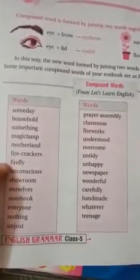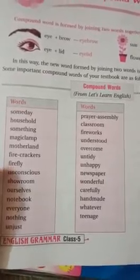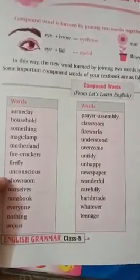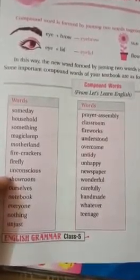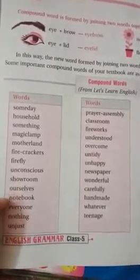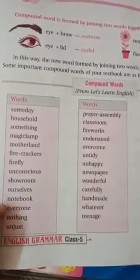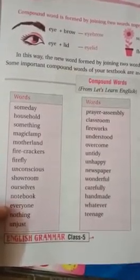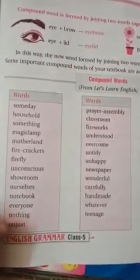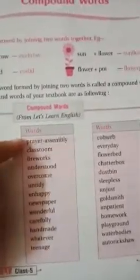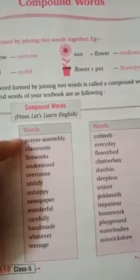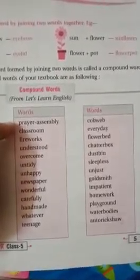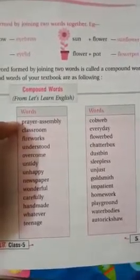More examples include firecrackers, firefly, unconscious, showroom, ourselves, notebook, everyone, nothing, unjust, and prayer assembly.